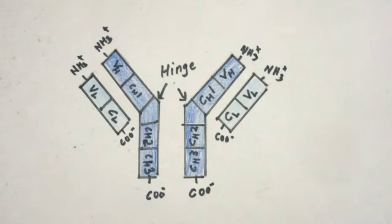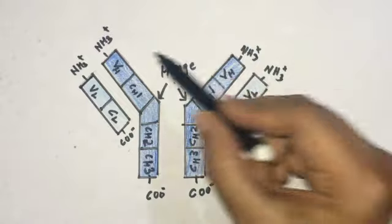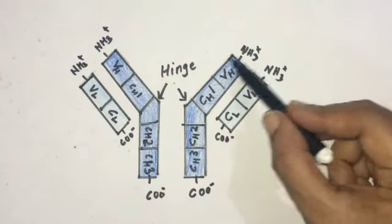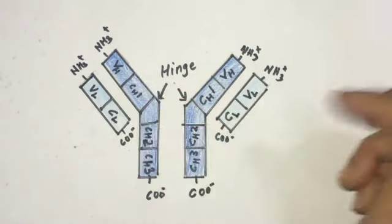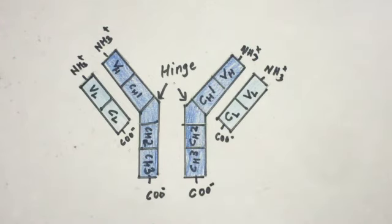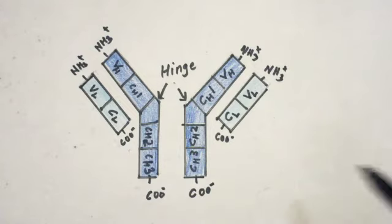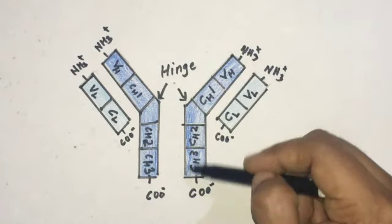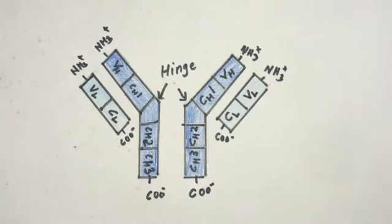Each heavy chain and light chain in an antibody contains an amino terminal variable region — this region is variable. It is the variable region that consists of 100 to 110 amino acids that differ from one antibody to the next. The remainder — the constant region — exhibits limited variation.